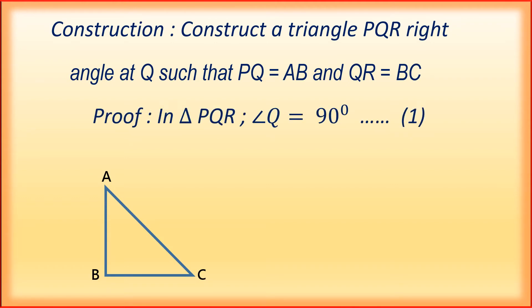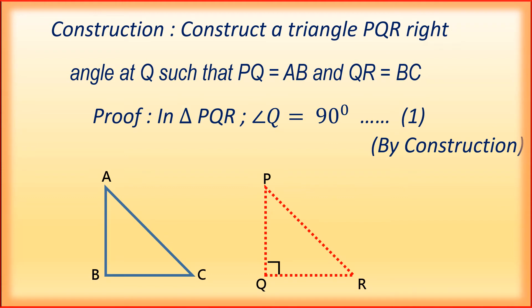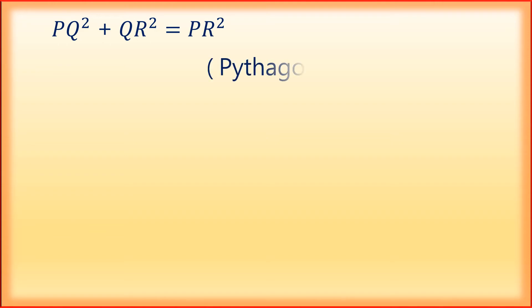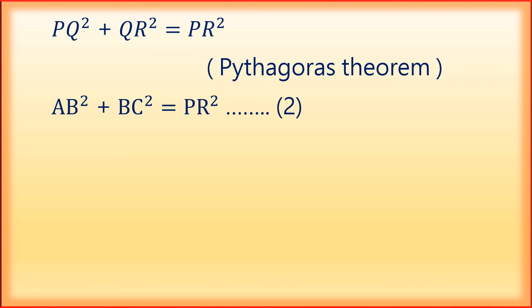Proof. In triangle PQR, angle Q is equal to 90 degrees — that is equation 1, by construction. We have constructed a right-angled triangle PQR right-angled at Q. So PQ is equal to AB and QR is equal to BC. By Pythagoras theorem, PQ square plus QR square is equal to PR square. Therefore, AB square plus BC square is equal to PR square — that is equation 2.